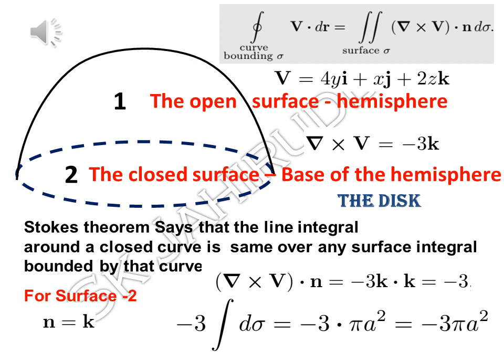Both the open hemisphere and the closed disk are bounded by the same dashed blue circle. Stokes theorem says the line integral around a closed curve is the same for any surface integral bounded by that curve. So the surface integral of curl V over the hemisphere should equal the line integral of the vector around the dashed blue circle, which in turn equals the surface integral of curl V over the disk.